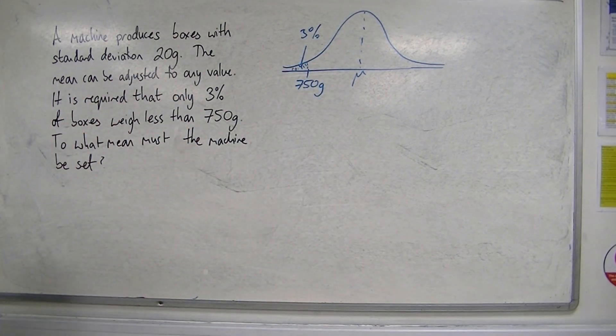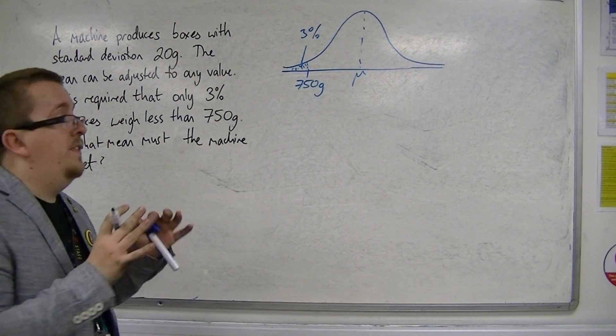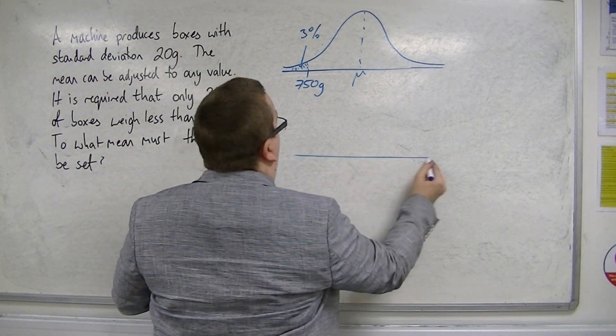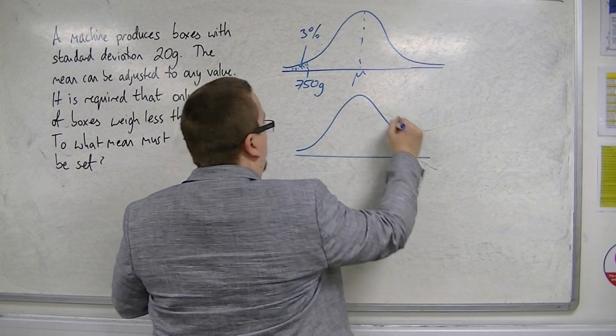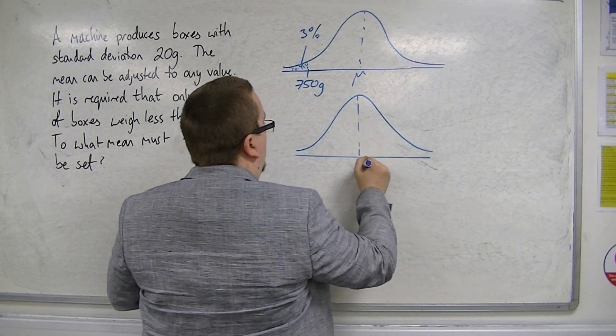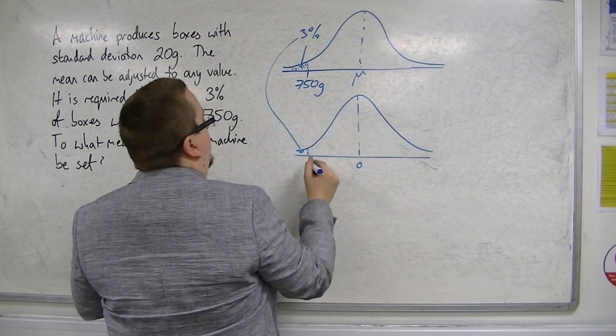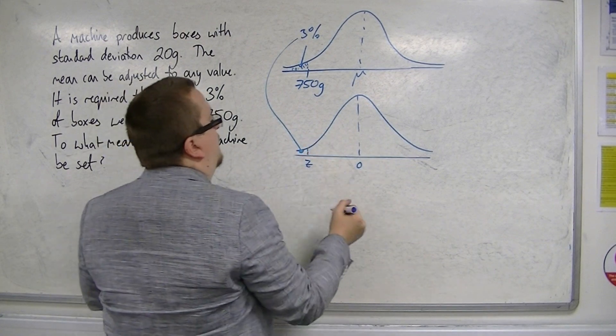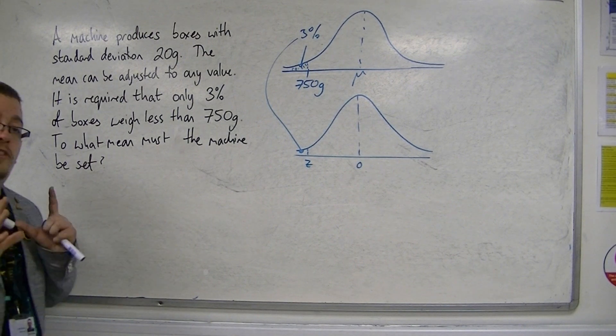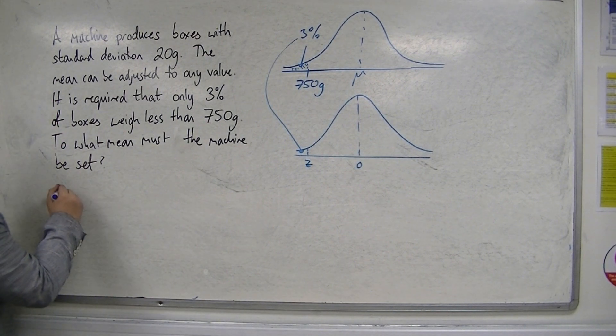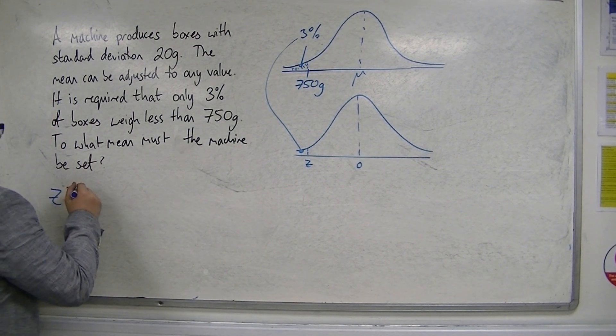We're going to compare this with the standardised normal, where this is also going to be 3%. So I can work out that value of z. In order to do that, we do the inverse norm of 0.03.